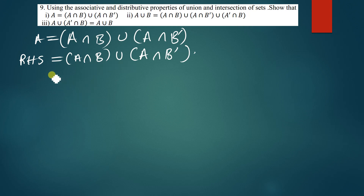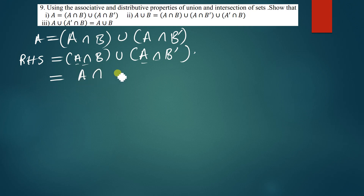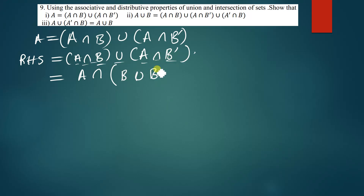This is already in a distributed format, so I'm going to reduce it to an associative format by looking at the common parts. I can see there's A in both terms with intersection, so I write A outside and open the brackets. The remaining parts inside are B and B', giving us A∩(B ∪ B').